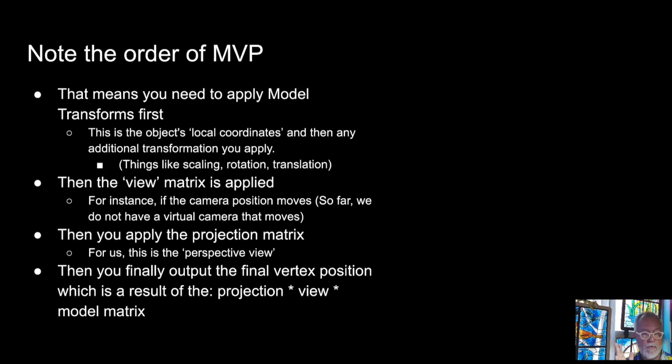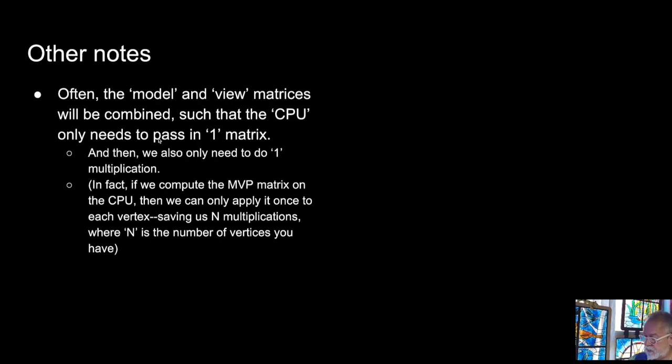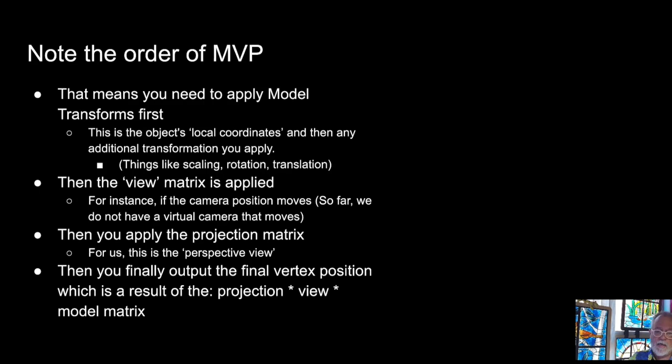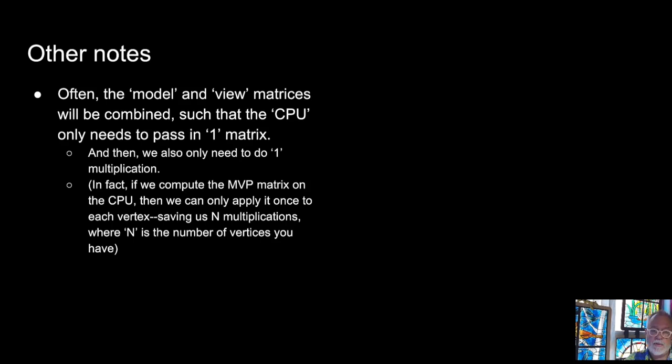So the order of MVP is really critical. You transform the model, then you transform it into the camera view, and then you do the projection. As we've said time and time again, the matrix multiplications, you have to do them in the right order. So we transform our object, then we transform it into the view matrix, and then we project it onto the screen, and then you have your final output that you can scan and convert.